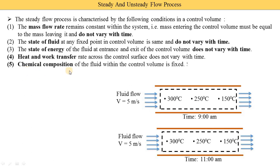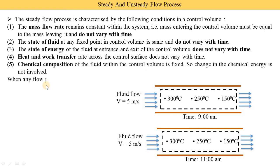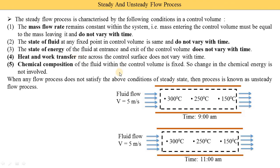The last condition is that the chemical composition of the fluid within the control volume is fixed. Suppose we are supplying a mixture of two, three, or four fluids, or a gas with different compositions — the chemical composition must be stable and not change with respect to time, meaning change in chemical energy is not involved. When any flow process does not satisfy these above conditions of steady state, the process is known as the unsteady flow process.